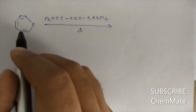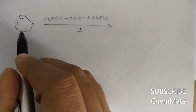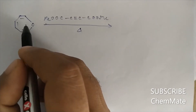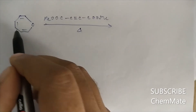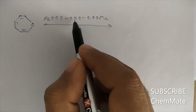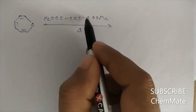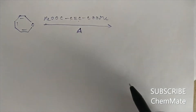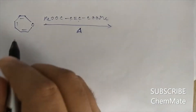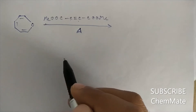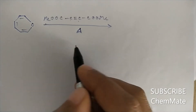Here is a very interesting question. This cyclo-heptadiene derivative will react with this acetylene derivative under heating conditions. What will be the product? To obtain the product, we have to know the Woodward-Hoffmann rule.